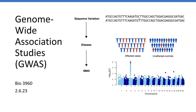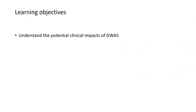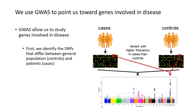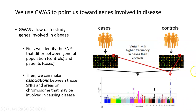In this portion of the GWAS lecture, we're going to review the basics of GWAS and then understand some of the potential clinical impacts that GWAS can have. We use GWAS to point us towards genes involved in disease. GWAS stands for Genome-Wide Association Study. In order for it to be genome-wide, we have to compare the genome sequences of individuals who have a disease — the cases — to genome sequences of individuals who do not have the disease — the controls.